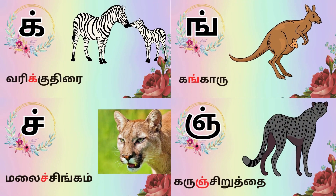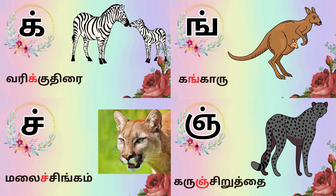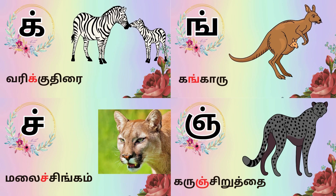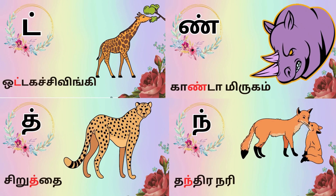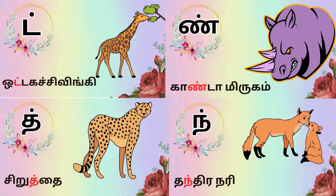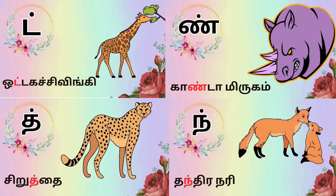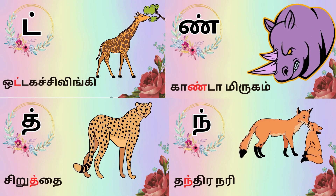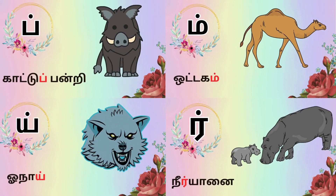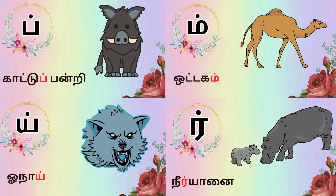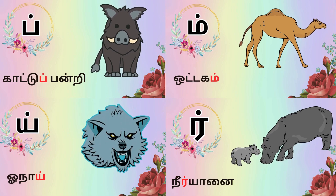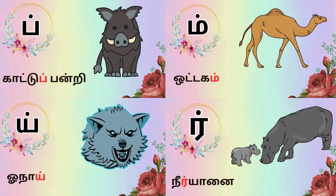Varikku Thiray, Kangaaru, Malay Cchingam, Yinju, Karunjirutthay, Kandamurigam, Sirutthay, Yindu, Khaatuppapu, Ottakam, Onaay, Neryanai.